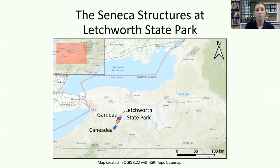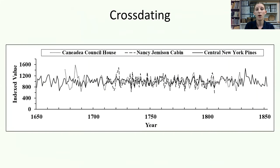With guidance and support from staff at the Cornell Tree Ring Laboratory, Letchworth State Park personnel, and others who had researched the Council House and Cabin previously, as well as permission from Mary Jemison's Seneca descendants, we successfully took 13 cores and cross-sections from the two structures. Most of these samples were eastern white pine and thus potentially dateable with one another and existing chronologies.